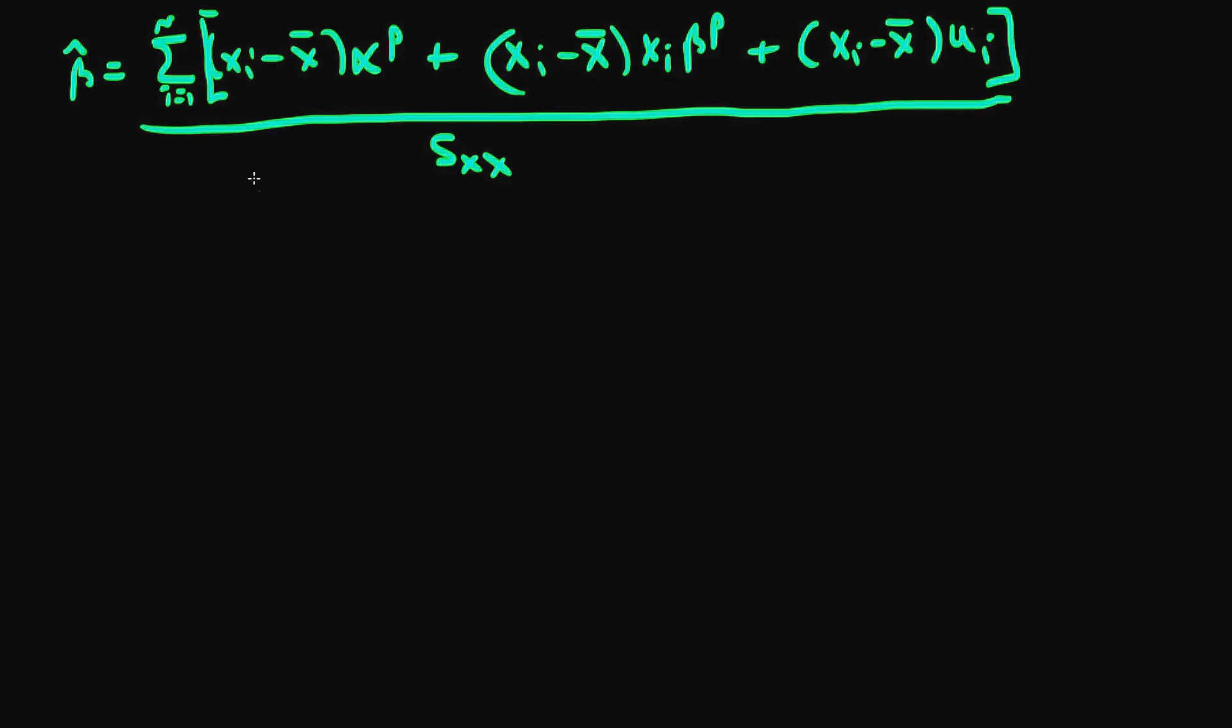Hi there, in the last video we got this unwieldy expression on the top here, on the way to proving that least squared estimators are in fact unbiased under the assumption of the Gauss-Markov conditions. So let's now think about each term in this above expression.